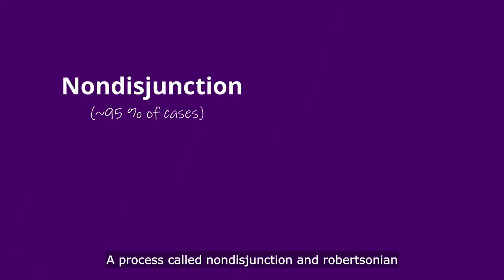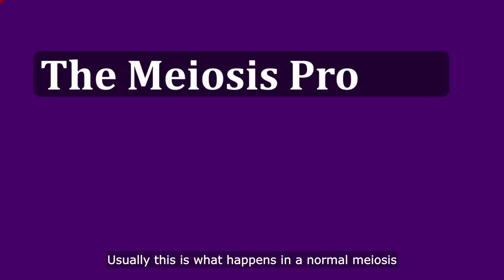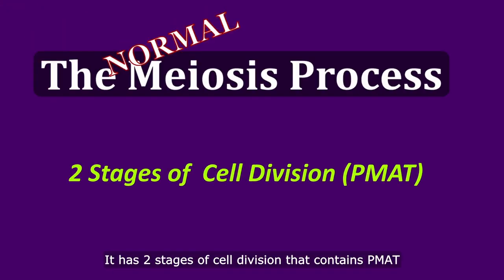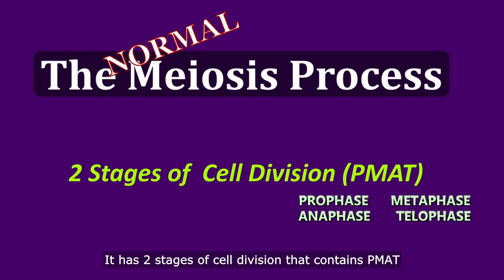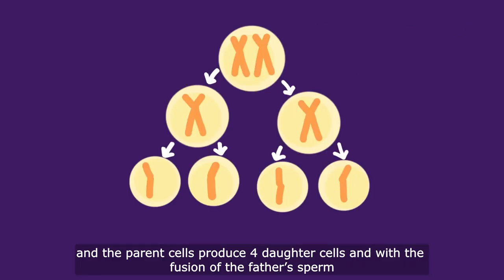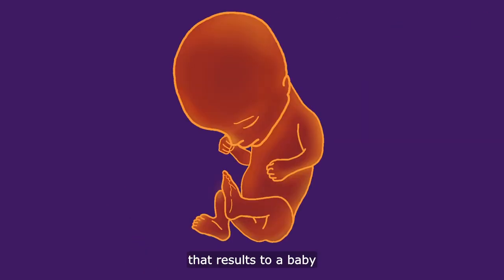A process called non-disjunction and Robertsonian translocation happens, resulting in Down syndrome. Usually, this is what happens in normal meiosis: it has two stages of cell division that contain the PMAT. The parent cell produces four daughter cells, and with a fusion of the father's sperm, that results in a baby.